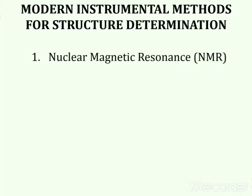The first method used for the determination of structure is Nuclear Magnetic Resonance Spectroscopy, also known in short form as NMR Spectroscopy. NMR Spectroscopy is very useful for the determination of Carbon, Hydrogen, Nitrogen, Sulphur, and Phosphorus.